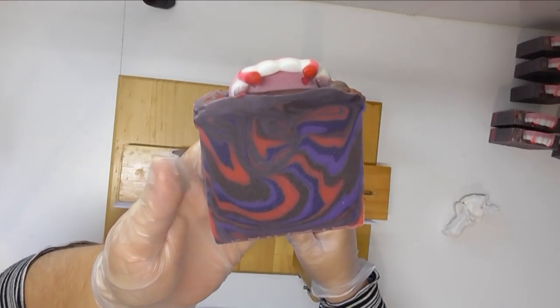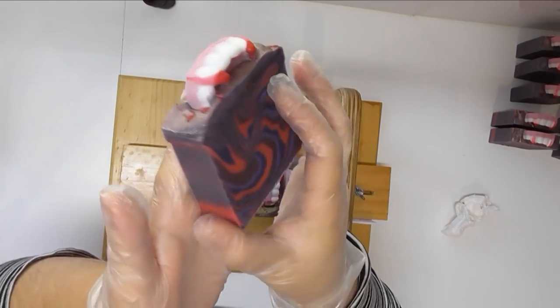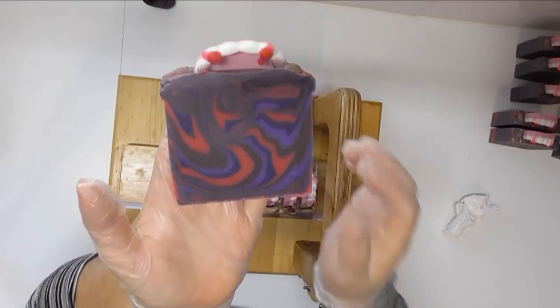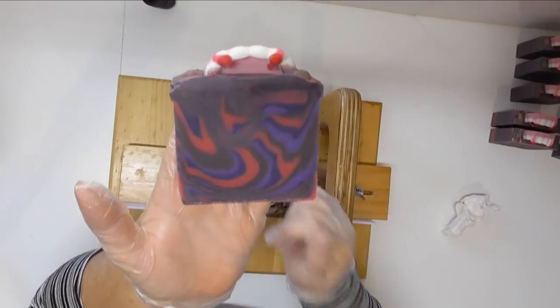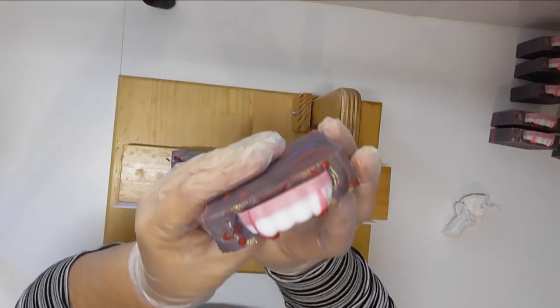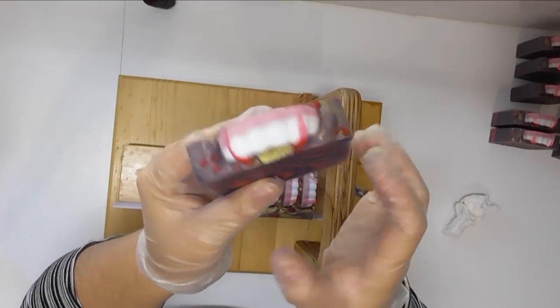I am loving how the swirls have that real hypnotic sort of look to them, so I think that ties in beautifully with those vampire teeth. I'm pretty happy that I did decide to go ahead with putting the teeth on the top of this one. I'm also loving those little blood splashes on the top of the soap too.